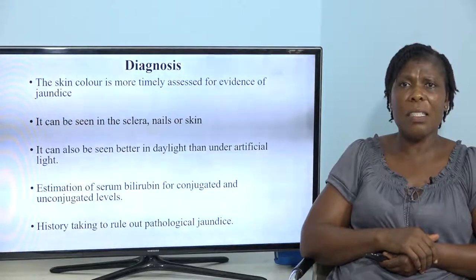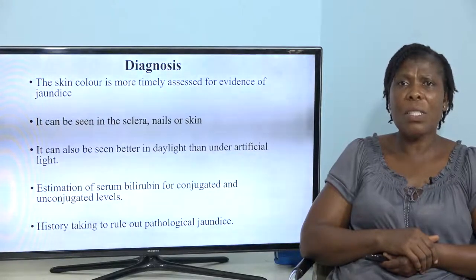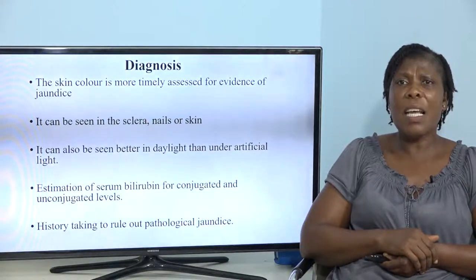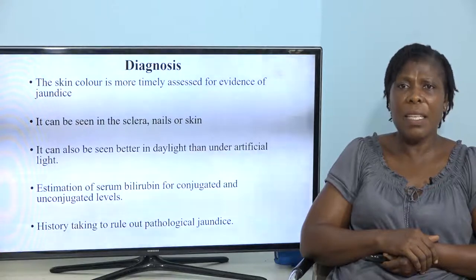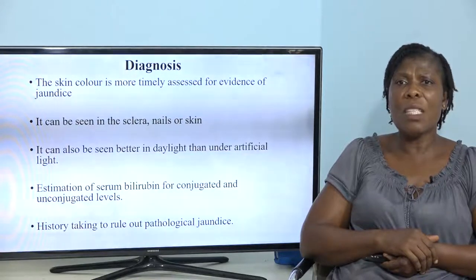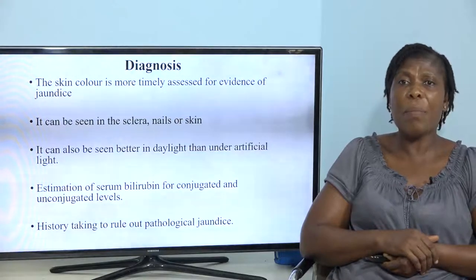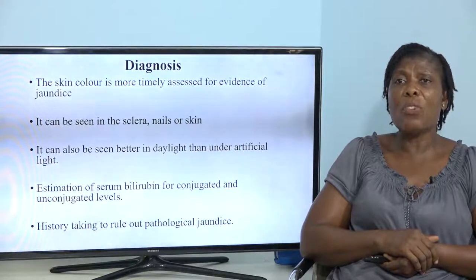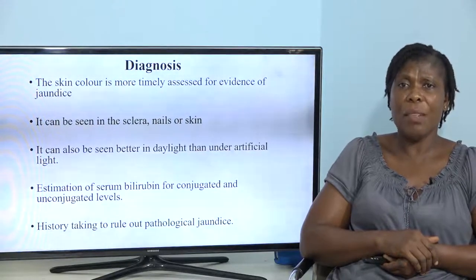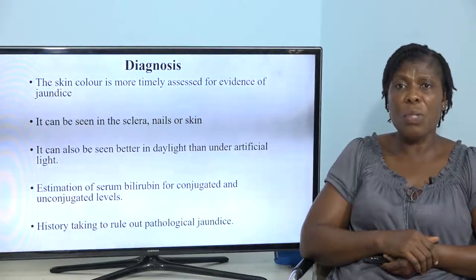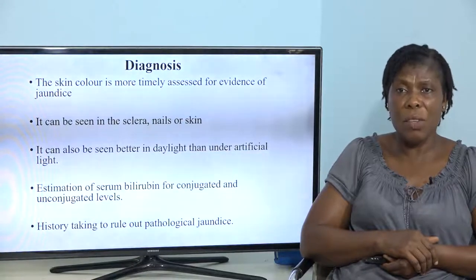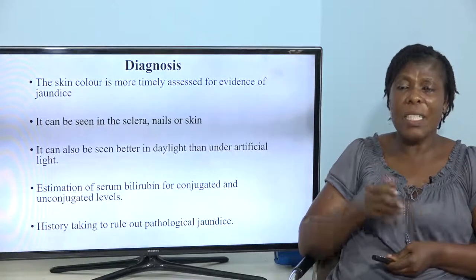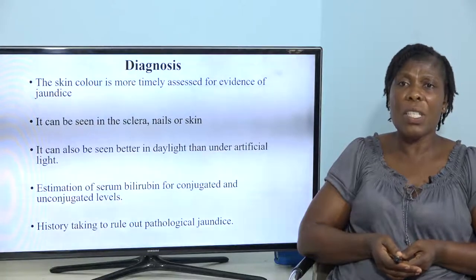How do we diagnose these babies? We can use the skin color to diagnose. It should be timely to assess it. It can also be seen through the sclera, the nose, and the skin. It can also be seen better in daylight. Some people keep their babies indoors for seven days — we are saying that although you are keeping the baby indoors, you should bring the baby to a light where you can see the color of the baby. Estimation of serum bilirubin for conjugated and unconjugated levels can also be used. This is also done to rule out pathological jaundice.